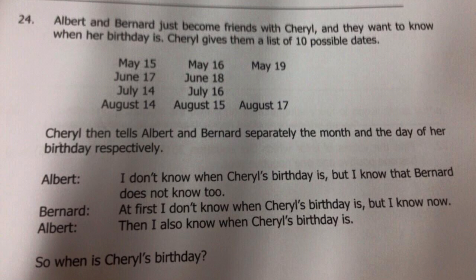First, let's read the question. Albert and Bernard just became friends with Cheryl and they want to know when her birthday is. Cheryl gives them a list of 10 possible days — I have no idea why — and it ranges from May 15 all the way to August 17. Cheryl then tells Albert and Bernard separately the month and the day of her birthday respectively.